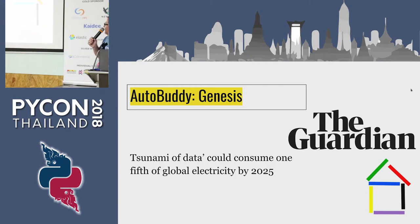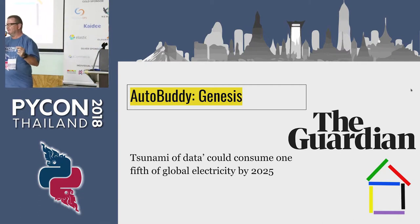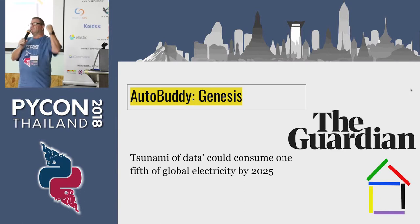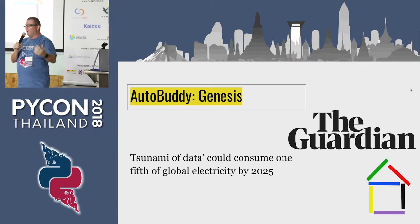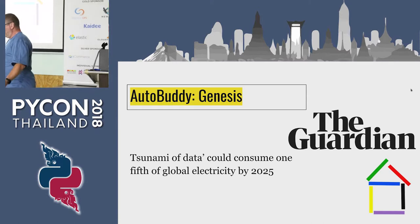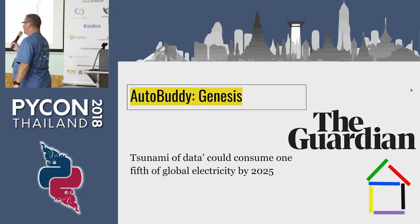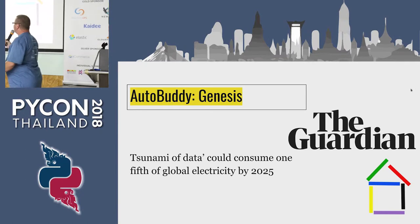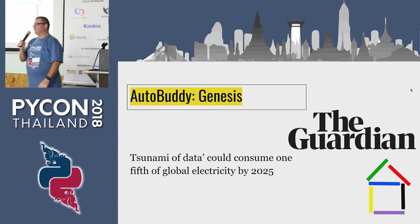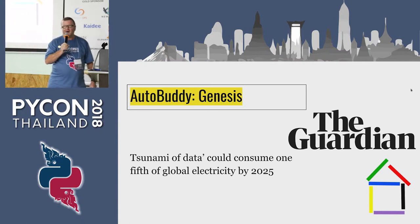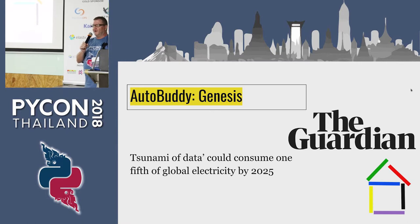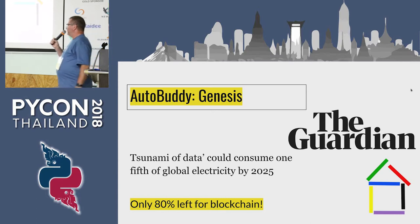On top of that, all those small packets we send consume energy. If we have to send them across the world, that's a lot of energy, especially as we have more and more IoT devices and home automation devices. The Guardian said that by 2025, 20% of energy is expected to be used for IoT — which is a problem because it means only 80% is left for blockchain.